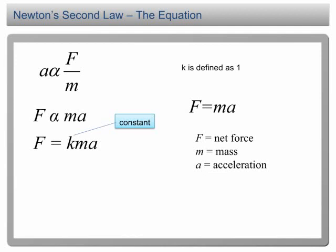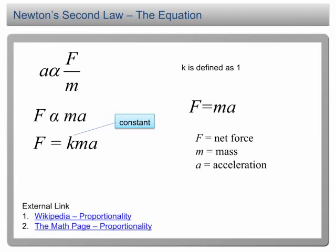If you are confused about the mathematics, you can ignore it and just memorize the equation. How this equation is developed is not important in the scope of SPM physics. In fact, you are going to learn this in your Form 5 Modern Math in a chapter called Variation. If you would like to know more about proportionality, you may visit Wikipedia or the math page for more detailed discussions.